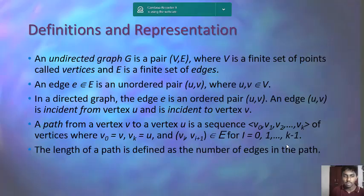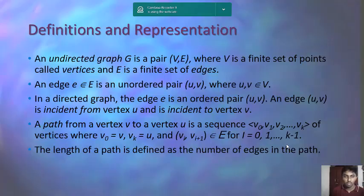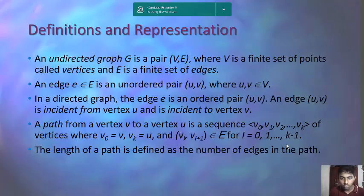In a directed graph, edge E is an ordered pair of U and V — it is essentially a vectored edge. An edge U to V is incident from vertex U and incident to vertex V. So an edge moving from U to V is a directed edge, and that graph is known as a directed graph. A path from vertex V to vertex U is a sequence V0, V1, V2, ... Vk.